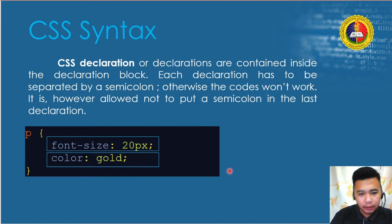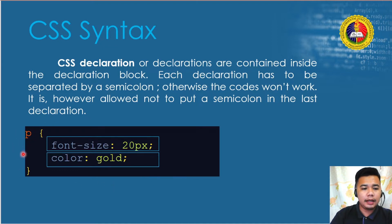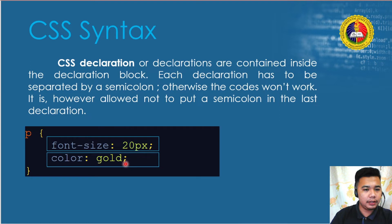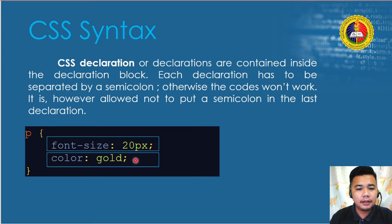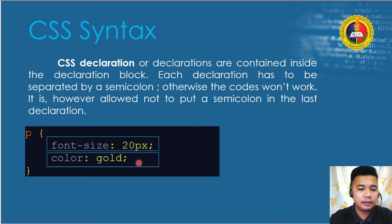Looking at our ruleset, we have the selector and the declaration block. Each line inside the declaration block is called a declaration. In our example we have two declarations, each separated by a semicolon. For the last declaration, a semicolon isn't required, but to be consistent and formal, we can include it anyway.